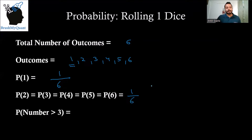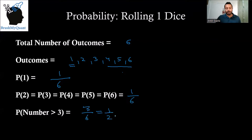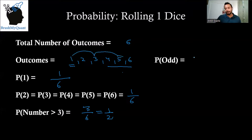What is the probability that the number we get is greater than three? Out of the six outcomes, there are three such numbers — four, five, and six — which are greater than three. So the probability that the number is greater than three is three divided by six, or one divided by two. What is the probability of getting an odd number? Out of the six outcomes, there are three odd numbers — one, three, and five. So probability of getting an odd number is also three by six, equal to one by two.